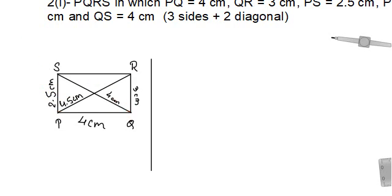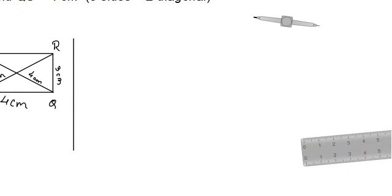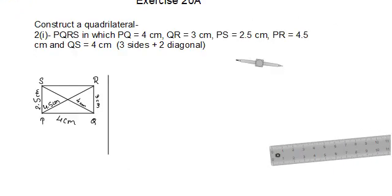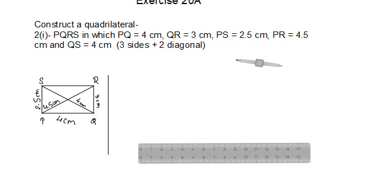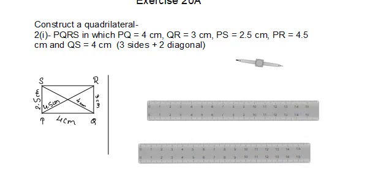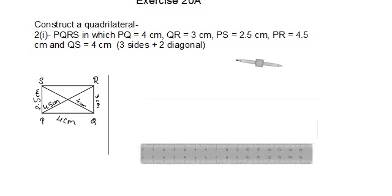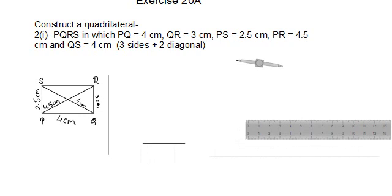Let's begin. Bring your ruler and draw a 4 cm line segment for PQ. Starting from zero, take it 4 cm forward — this is your PQ, done. You can do the labeling now or later.